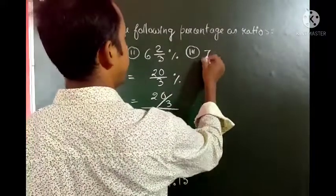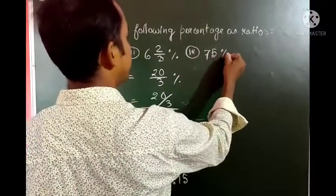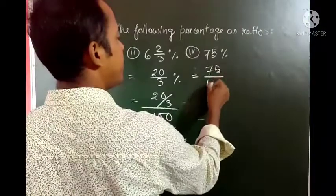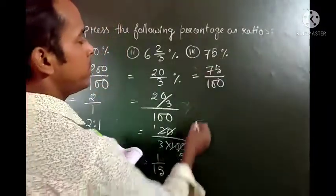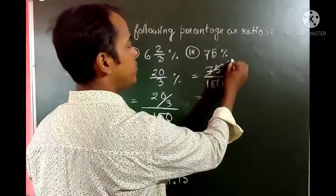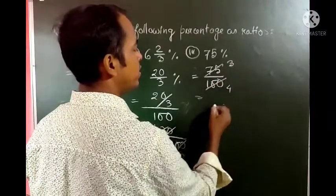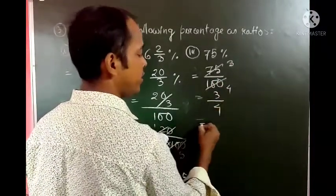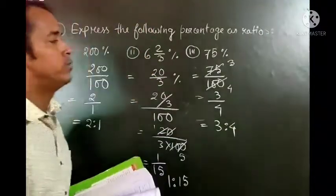The next percentage, 75%, gives 75 by 100, which simplifies to 3 by 4. And in ratio form, 3 is to 4.